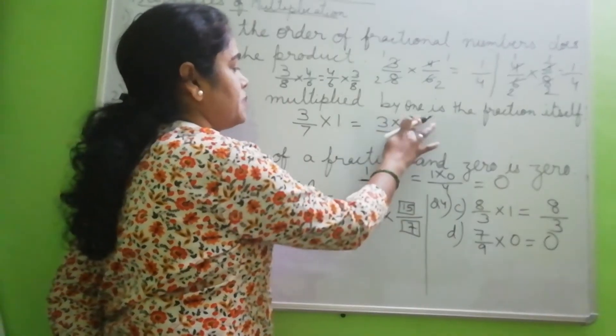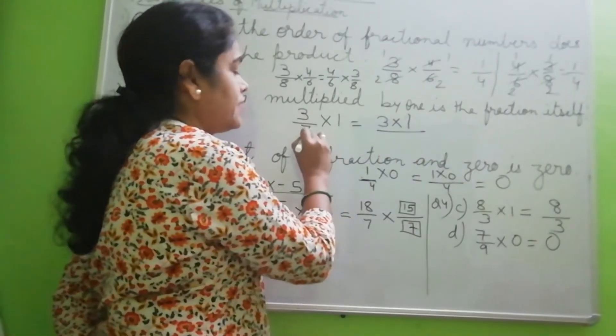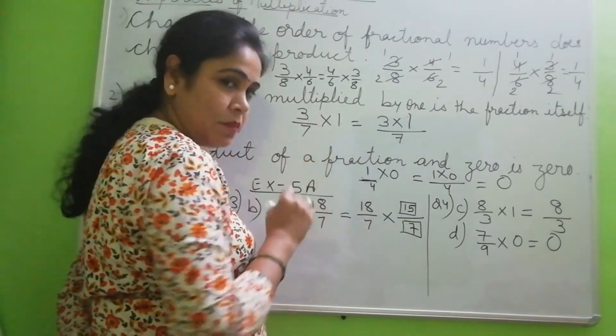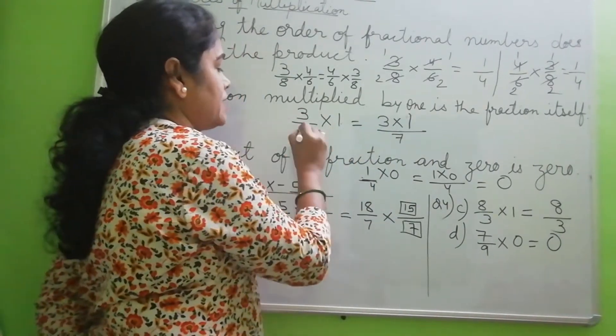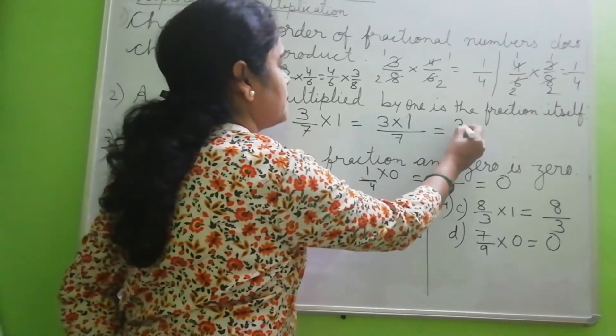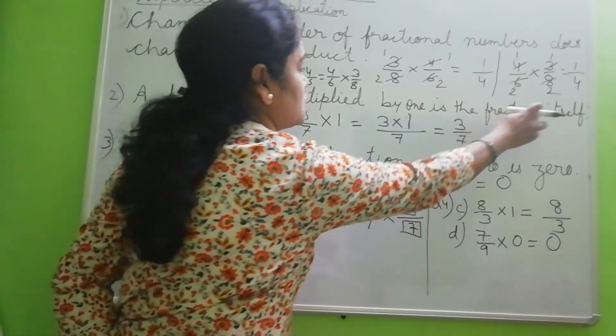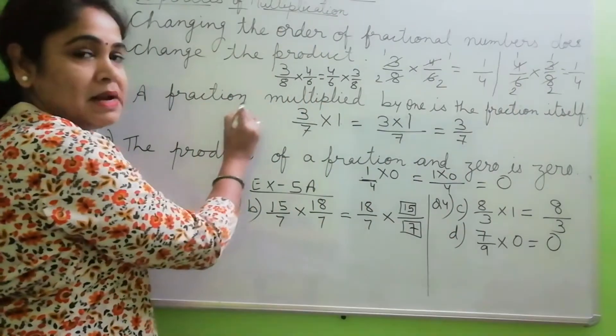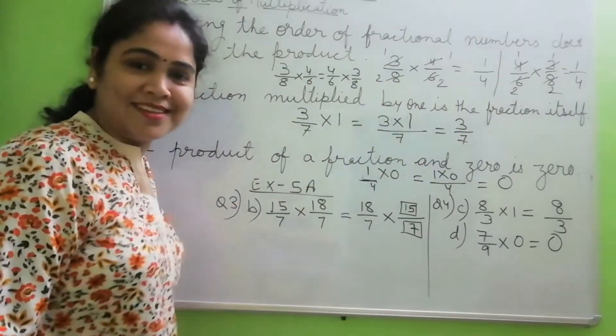And then, sorry, numerator is here 1. And then 7 we write as denominator because here no denominator is there. So we are writing this 7. So what is our answer? 3 by 7. Fraction itself. A fraction multiplied by 1 is the fraction itself.